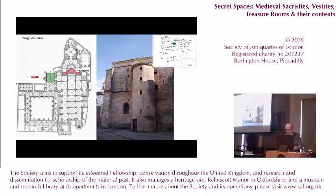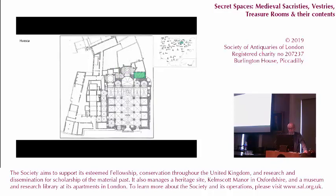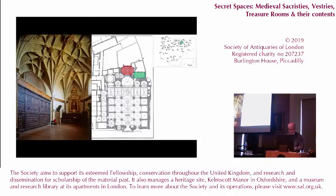Another independent sacristy was constructed in Ávila in the 13th century, between its unusual transept and the gates of the cathedral. Part of this structure survives and was incorporated into the fabric of the cloister. At Huesca, where the church was built atop the site of a Christianized mosque at the end of the 13th century, another sacristy topped by a treasury was built between 1506 and 1508, adjoining the eastern side of the southern axis of the cathedral, and was later expanded during the 16th century.